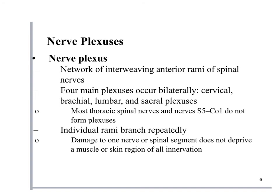Moving on to plexuses — the anterior rami of each spinal nerve go out and weave into one another, mixing together. There are four major plexuses you are responsible for: cervical, brachial, lumbar, and sacral.